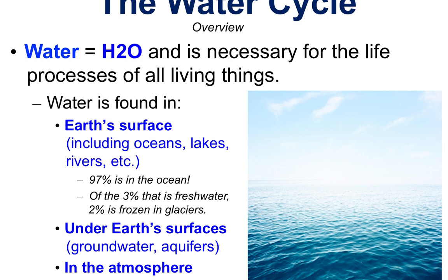Under the Earth's surface is where a lot of this water is — it's contained in groundwater and aquifers. There's also a lot up in our atmosphere; we notice and see it as clouds or humidity. And water is also found in organisms. When we eat vegetables, especially green plant matter and even proteins, we do take on water from those actual materials.